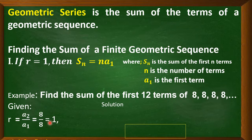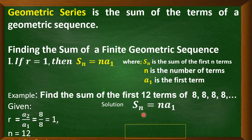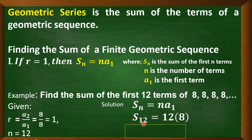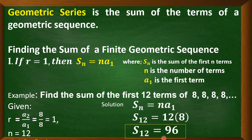Our common ratio is 1 and our n is equal to 12, since we are asked to find the first 12 terms. For our solution, we use the formula S sub n equals n times a sub 1. By substitution, S sub 12 equals 12 times 8, so that is equal to 96. The sum of the first 12 terms is equal to 96.